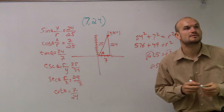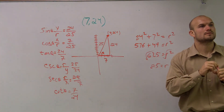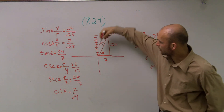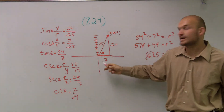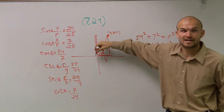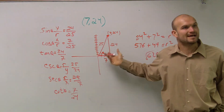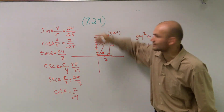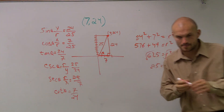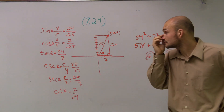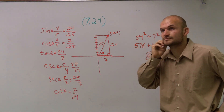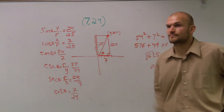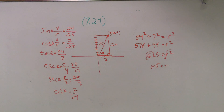Does anybody have any questions? A student asks: how do you know where theta is? It doesn't really matter. All you need to know is that your x is 7 and your y is 24. If you create a right triangle with that, those two values are your legs — your width and your height. You could draw the triangle however you want. If the point were in the second quadrant, the base would be negative 7, so cosine would change to negative 7 over 25, and tangent would be negative as well.